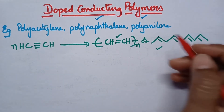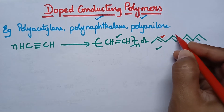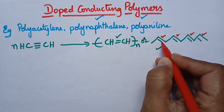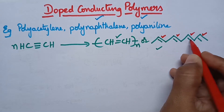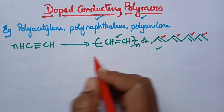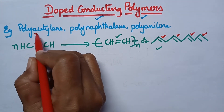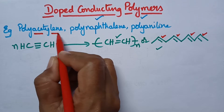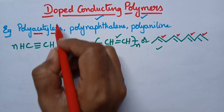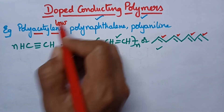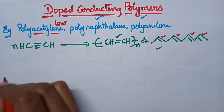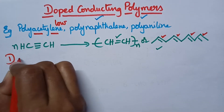The presence of these double bonds is mainly responsible for conduction, since the electrons present in the double bond are loosely held and are responsible for the conductance. However, the conductance of polyacetylene and conducting polymers in general is low. The conductance of these polymers can be improved by a process called doping.